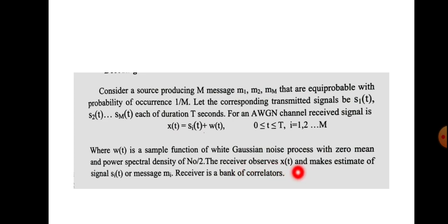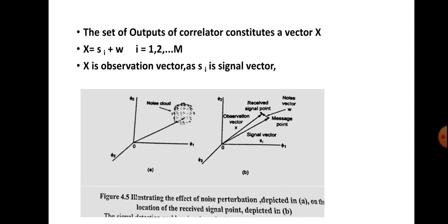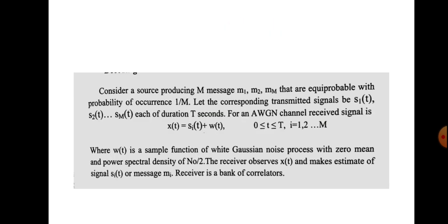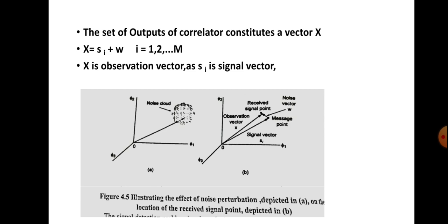The receiver is a bank of correlators. The set of outputs of the correlator bank constitutes an observation vector x, where x equals [x1, x2, ..., xN]. We can write the vector relationship as x equals si plus w, relating the received vector to the transmitted signal vector and noise vector.